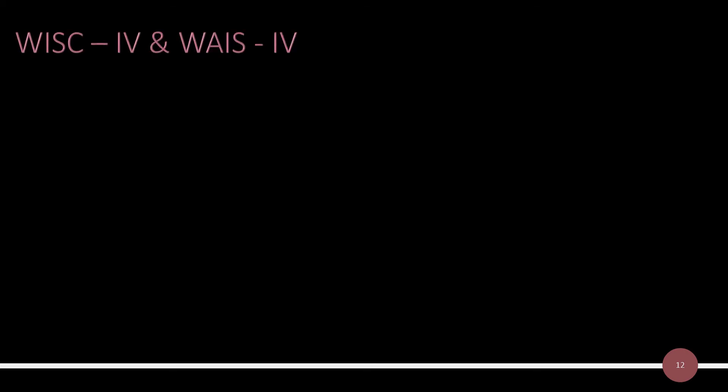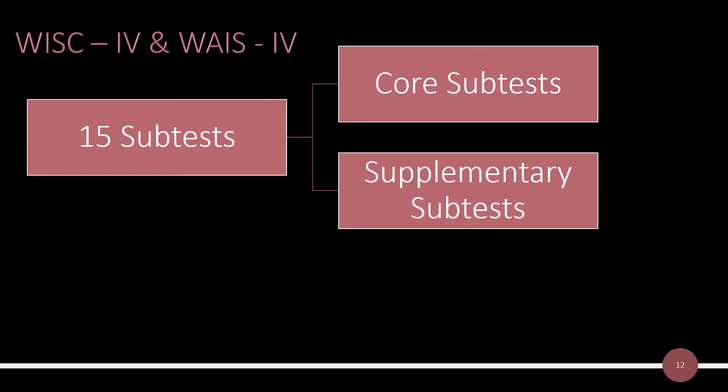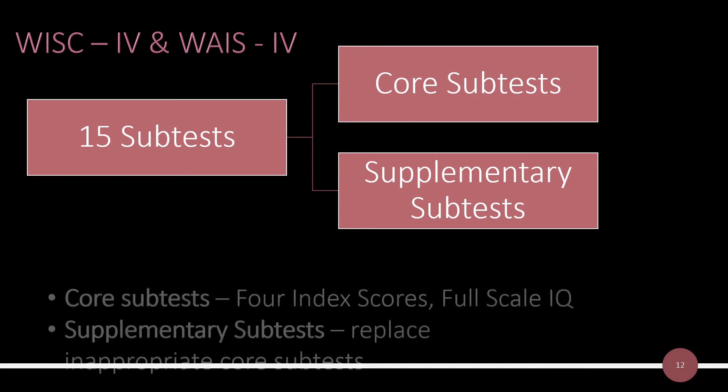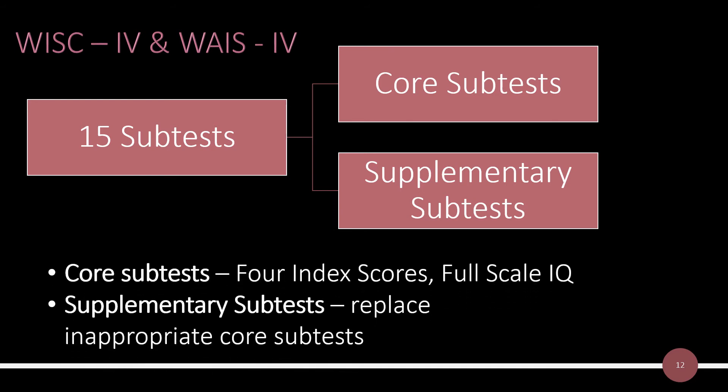WISC-4 and WAIS-4 each have 15 subtests. Out of these 15 subtests, 10 are core subtests and 5 are supplementary subtests. The core subtests are used to measure 4 index scores and full-scale IQ. The supplementary subtests are used if a core subtest cannot be used for a particular child.